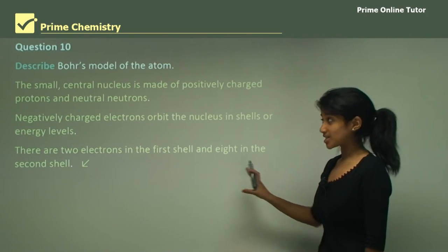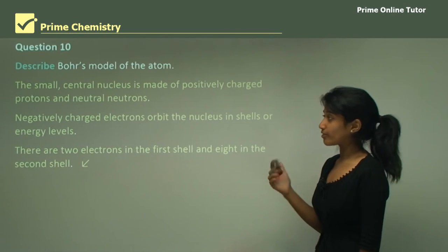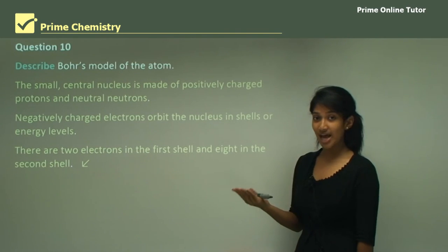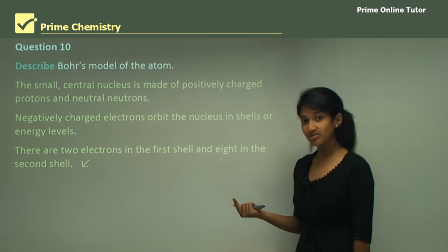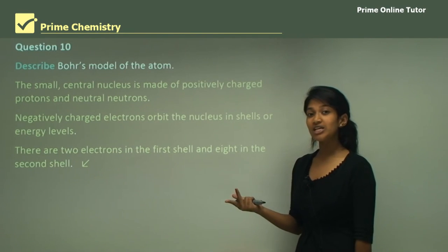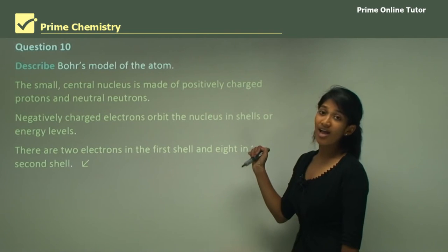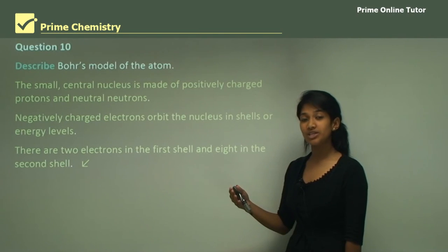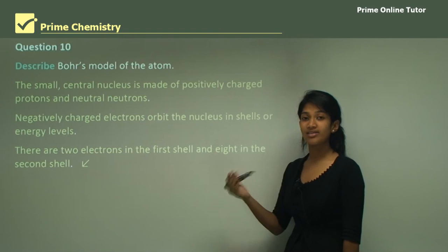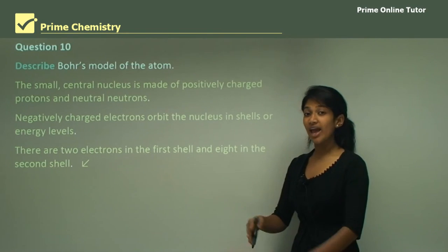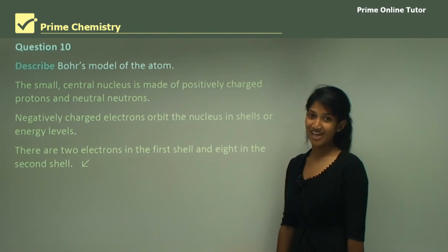This brings us to the end of the lesson. We looked at four different scientists: first Dalton, then JJ Thomson, then Rutherford, and lastly Bohr. We looked at how they developed the atomic model and how they enhanced one another's theories, culminating in the most recent one — Bohr's model of the atom.